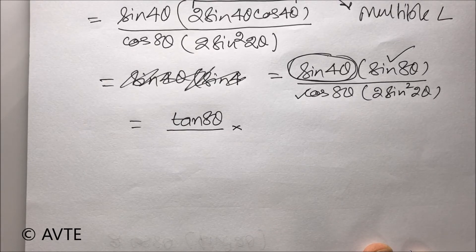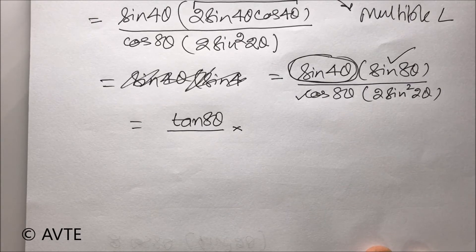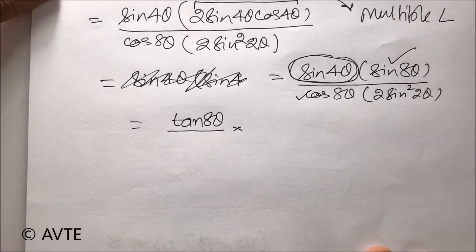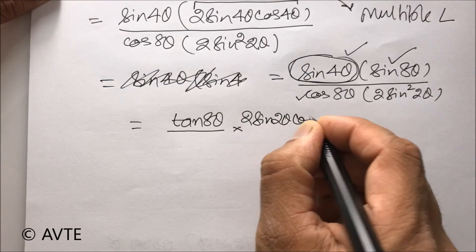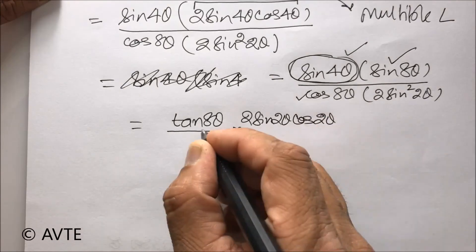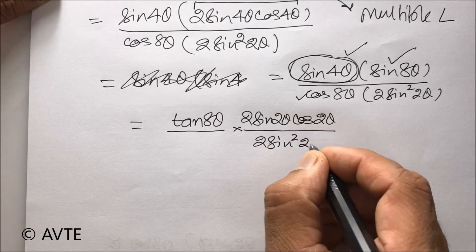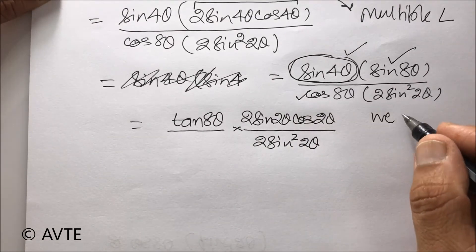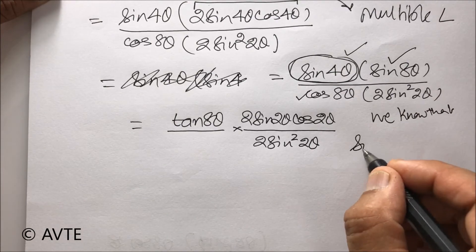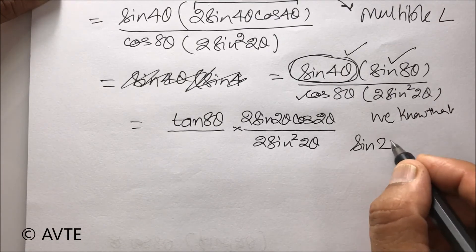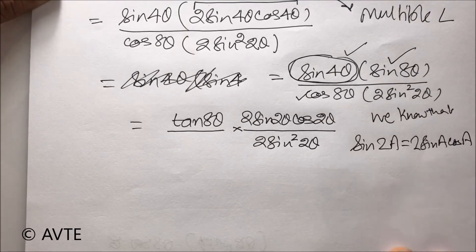Yes. Because the target is either 8 theta or 2 theta. Now, one sine 4 theta is consumed in the multiple angle and the remaining sine 4 theta will be converted to 2 sine 2 theta cos 2 theta divided by 2 sine square 2 theta. Because we know that sine 2 theta is 2 sine 2 theta cos 2 theta.